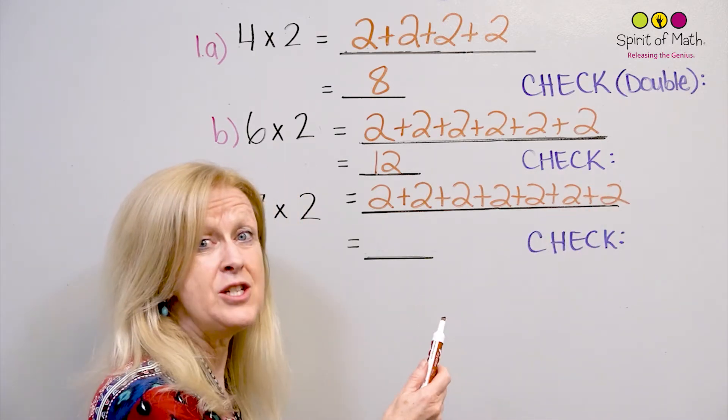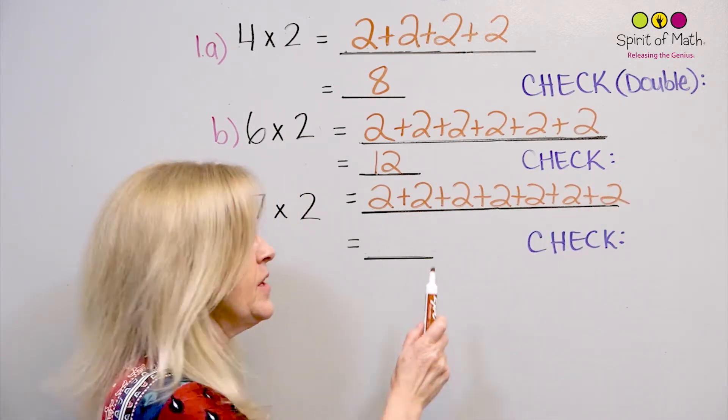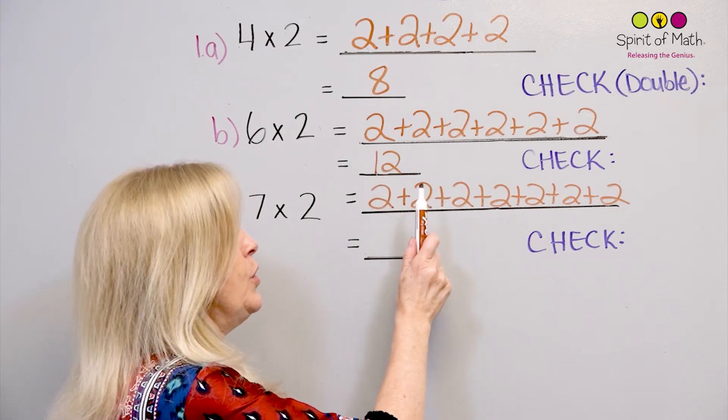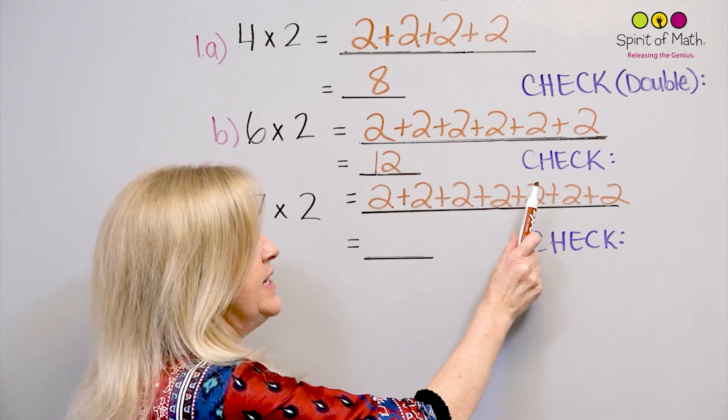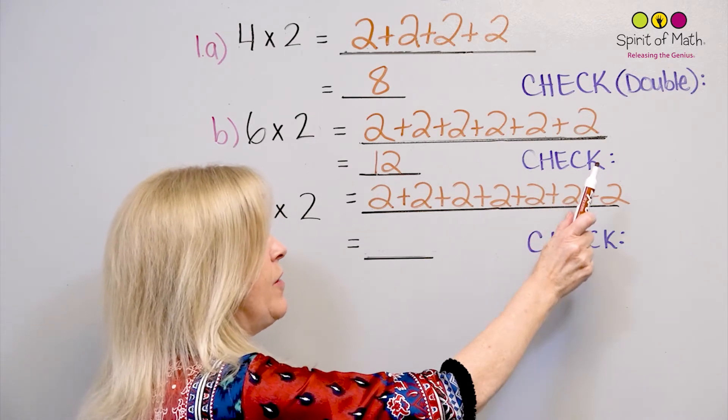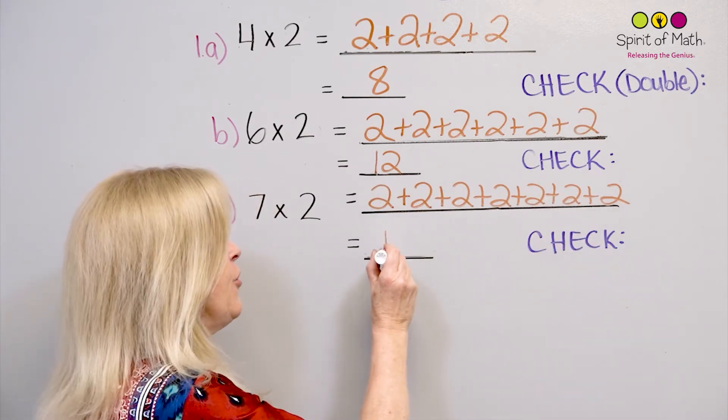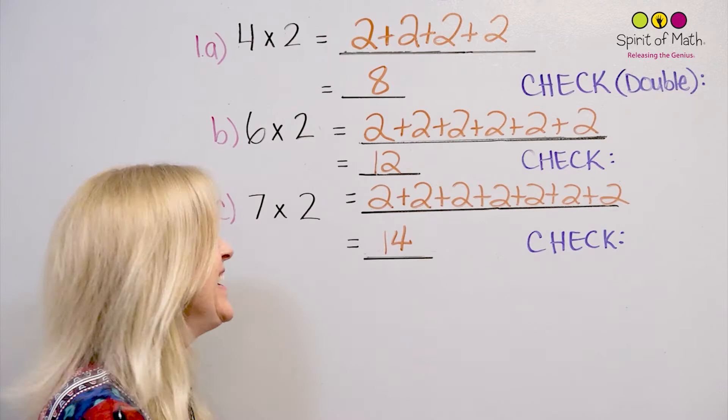So let's skip count by 2's together. Are you ready? Go. 2, 4, 6, 8, 10, 12, 14. Did you get 14? Good. All right.